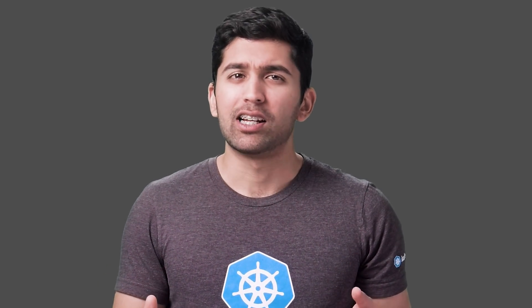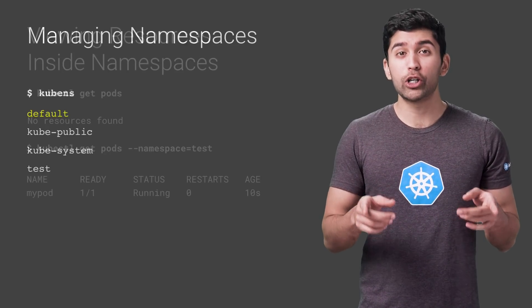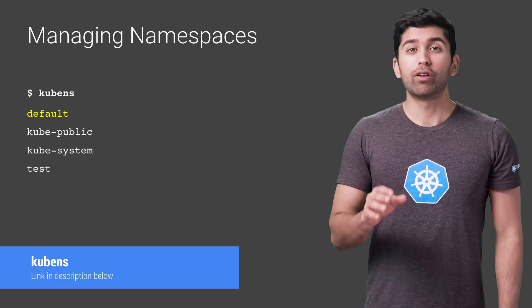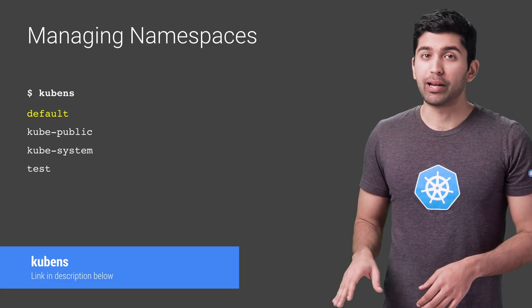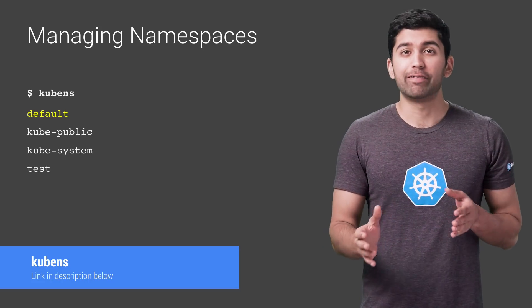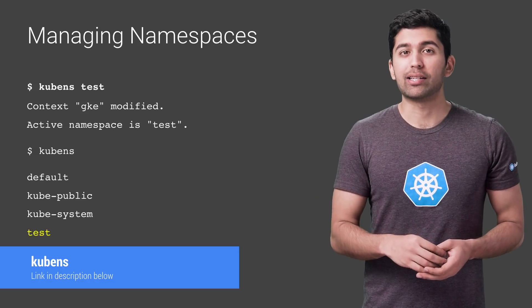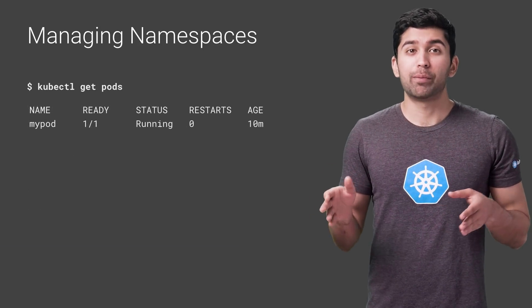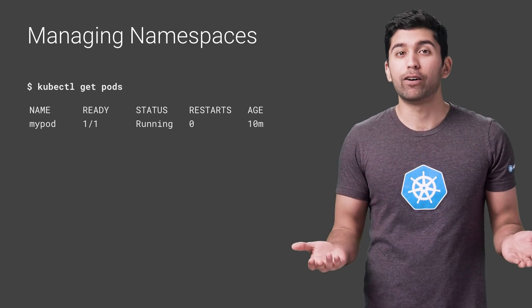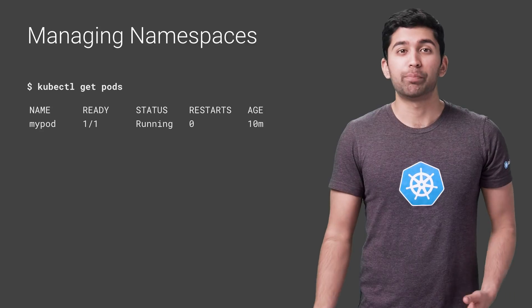Out of the box, your active namespace is the default namespace. Unless you specify a namespace in the resource's YAML, all Kubernetes commands will use the active namespace. Unfortunately, trying to manage an active namespace with kubectl can be a pain. Fortunately, there's a really good tool called kubens that makes it a breeze. When you run the kubens command, you should see all the namespaces with the active namespace highlighted. To switch your active namespace to the test namespace, you can just run kubens test. Now you can see the test namespace is active, and kubectl commands will use test instead of default, so you don't need the namespace flag to see the pod in the test namespace.